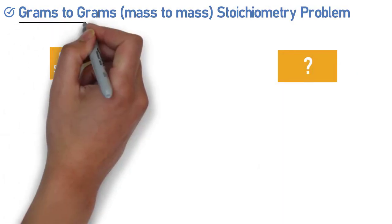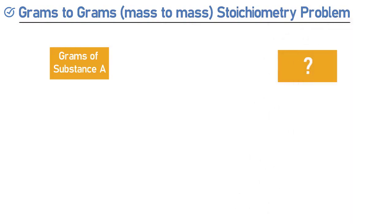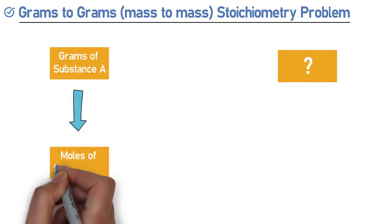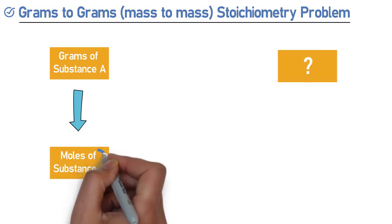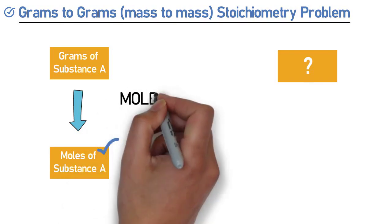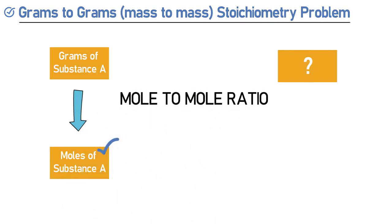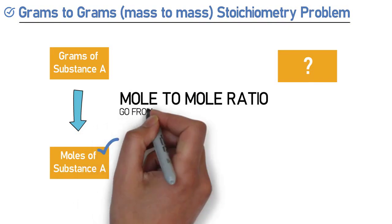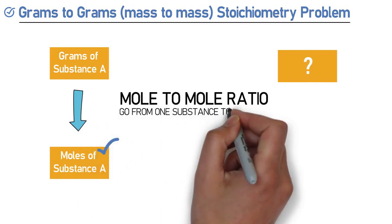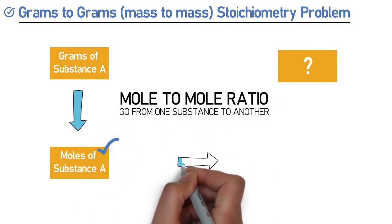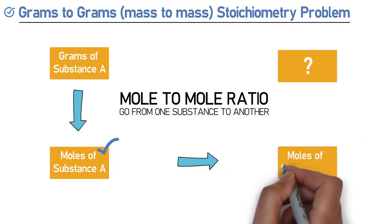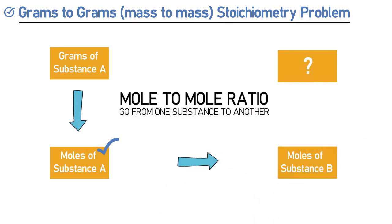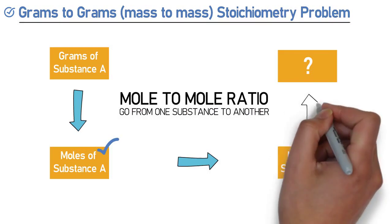When this type of problem is given, we call that a grams-to-grams stoichiometry problem. The basic steps: first, get the balanced equation — this is needed for all problems. Then take the grams of what we know and convert that to moles of that substance. Once we have the moles of the known substance, we do a mole-to-mole ratio, which allows us to go from one substance to another. Then we find the grams of the substance we are trying to find.